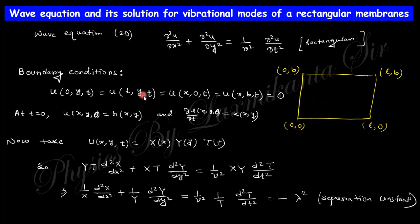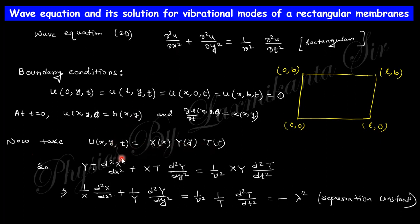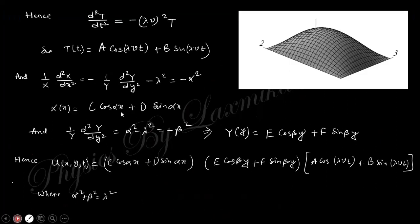The boundary condition is that along all four boundaries, the displacement is zero. Initially, the displacement has some value and the velocity will also have some value — the displacement will be a constant. These are the boundary and initial conditions. Using the separation of variables method, we take three variables x, y, and t. Substituting the partial derivatives into the equation, we separate the variables. Taking the separation constant, the time solution comes out, and the remaining x and y parts are also separated.